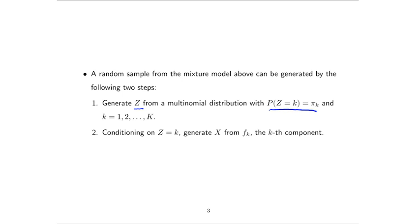In other words, we first decide which component each observation is from. Then, conditioning on Z = k, we generate X from the k-th component.